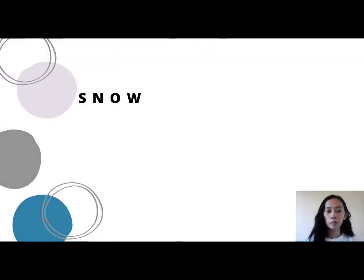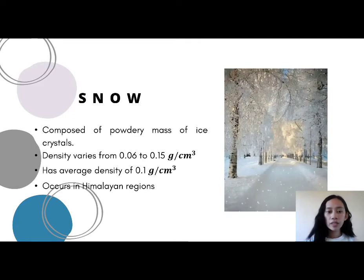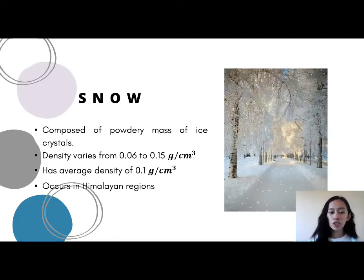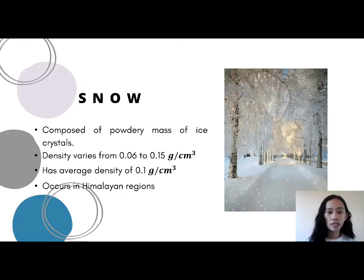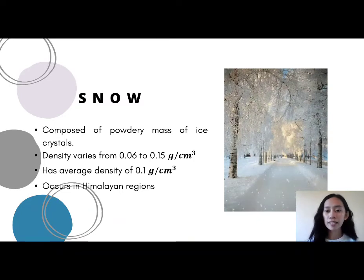Snow is the second form of precipitation. Snow is composed of a powdery mass of ice crystals, with density varying from 0.06 to 0.15 grams per cubic centimeter, and an average density of 0.1 grams per cubic centimeter. In India, it occurs in the Himalayan mountains. In the Philippines, snow does not occur. Our country only experiences two seasons: the dry or hot season, and the rainy season. However, with the drastic change of climate happening globally today, it is not impossible for the Philippines to add a winter season. Some elevated parts of the country, like Baguio City or Benguet, show signs of snow.